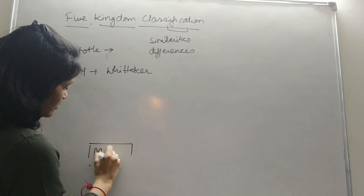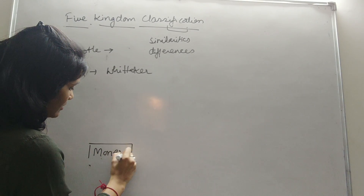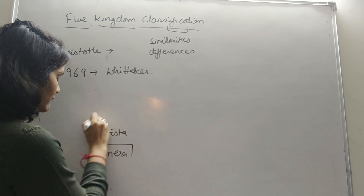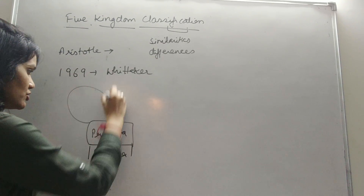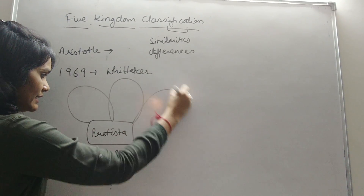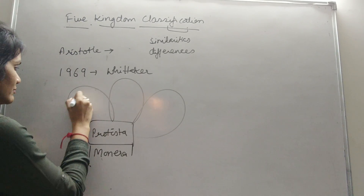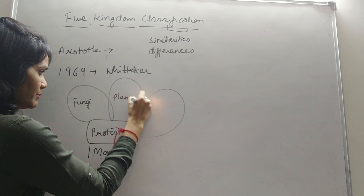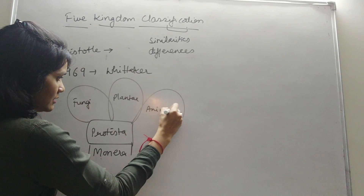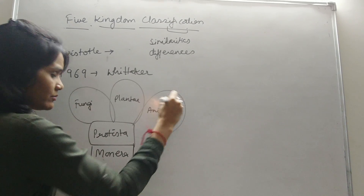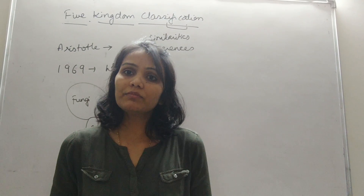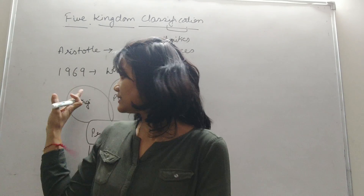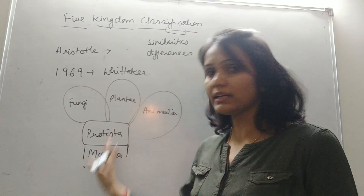There are five kingdoms: Monera, Protista, Fungi, Plantae, and Animalia. This became the most acceptable classification because it has certain criteria on which we classify all living organisms.